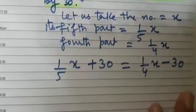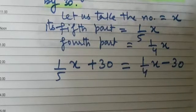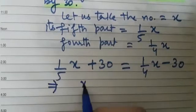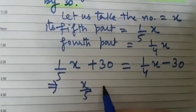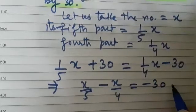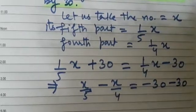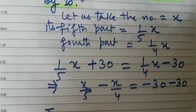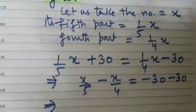So here we get the linear equation in one variable and now we are going to solve this. So this implies x upon 5 minus x upon 4 is equal to minus 30 minus 30. So what we have done? We have brought variables to one side and constant terms to the other side.